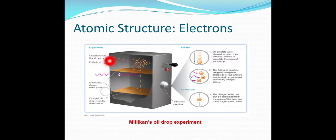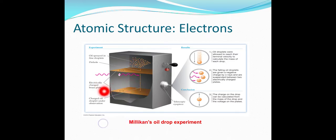In Millikan's oil drop experiment, oil is sprayed as fine droplets through a pinhole between electrically charged brass plates. First, oil droplets are allowed to reach terminal velocity to calculate the mass of each drop. Then the falling droplets are given a negative charge using X-rays and suspended between the charged plates. The charge on each drop is calculated from the mass of the drop and the voltage on the plates.